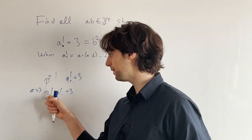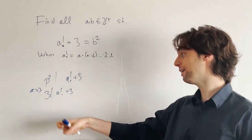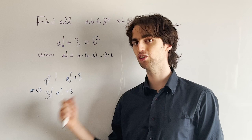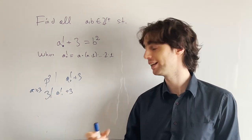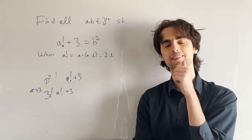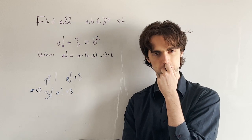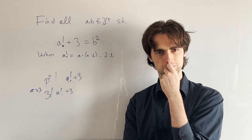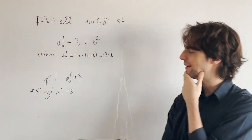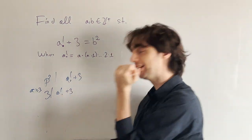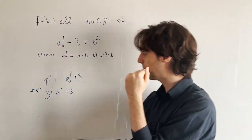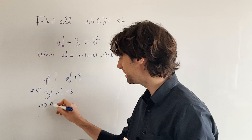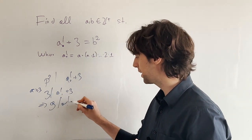Now, this means if 3 divides a factorial plus 3, and if this is a perfect square, which number also needs to divide a factorial plus 3? Take two minutes and figure that out. And here's the thing. If 3 divides it, because if this is a square, we will have that. That implies that 9 needs to divide a factorial plus 3.